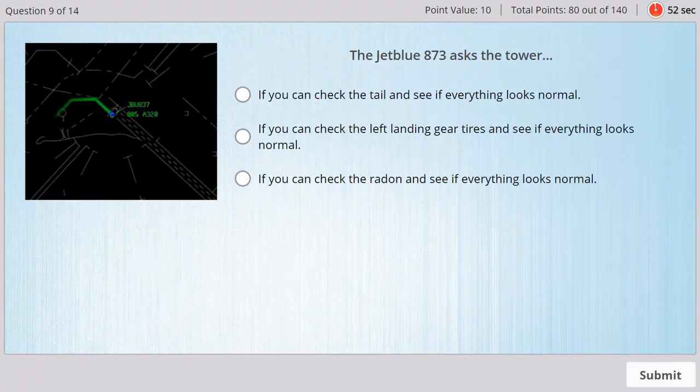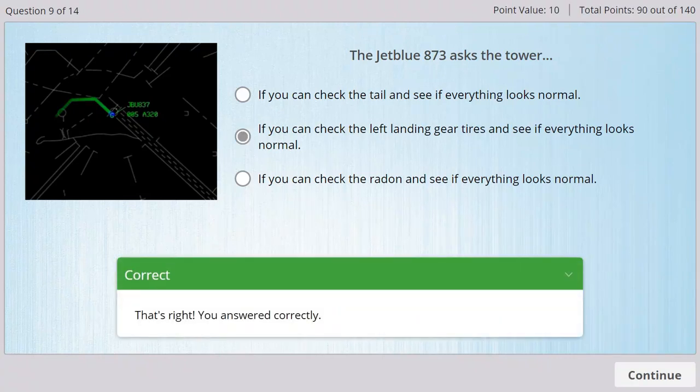JetBlue 837, fly heading 180, and both gears appear down. Okay, heading 180, JetBlue 837. Yeah, if you can check the left, see if everything looks normal. JetBlue 837, Roger. JetBlue 837, your left side appears to have two tires, and your right side appears to have two tires. Okay, how's the nose look for JetBlue 837? JetBlue 837 appears to have two smaller tires for the nose gear. Okay, thanks. JetBlue 837. We're going around, and you said heading 180? JetBlue 837, fly heading 180.